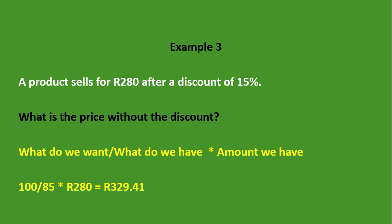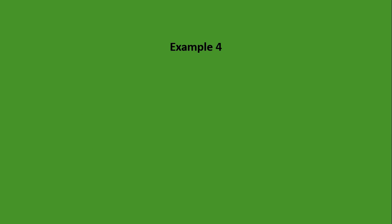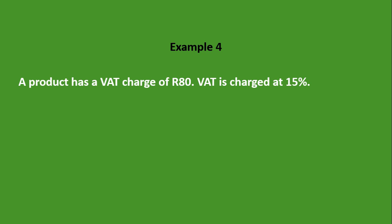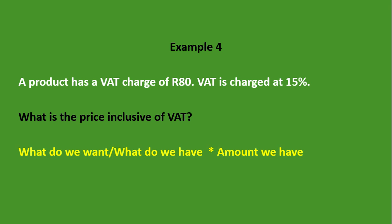That gives us a total of 329.41 rand. Now let's look at our final example. A product has a VAT charge of 80 rand, charged at 15 percent. What is the price inclusive of VAT? Using our formula: what do we want? The price inclusive of VAT, which is 115 percent. What do we have? We have only the VAT charge, which is 15 percent. So the formula is: 115 divided by 15, times 80 rand, giving us a total of 613.33 rand.